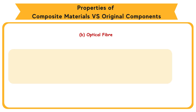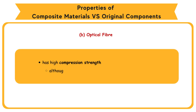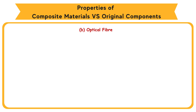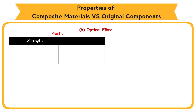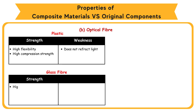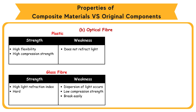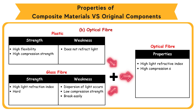B: Optical fiber. Optical fiber has high compression strength although the original component, glass fiber, is brittle. Plastic strengths: high flexibility, high compression strength. Weakness: does not refract light. Glass fiber strengths: high light refraction index, hard. Weakness: dispersion of light occurs, low compression strength, breaks easily. Plastic combined with glass fiber becomes optical fiber with properties: high light refractive index, high compression strength, flexible, light dispersion is prevented, and high stretching strength.